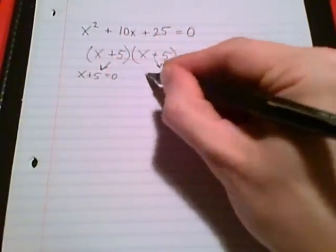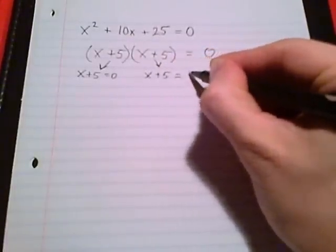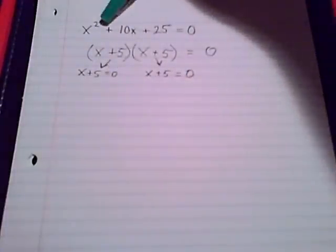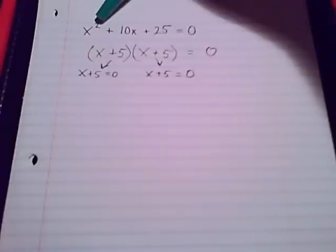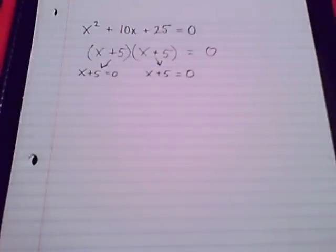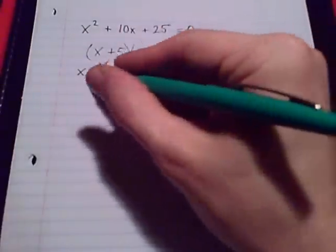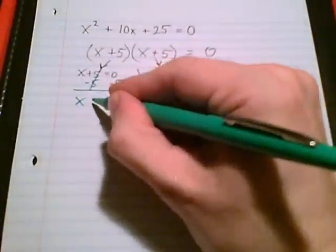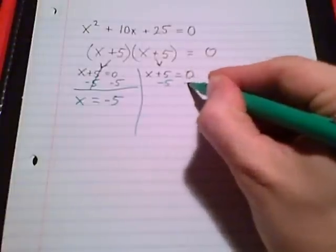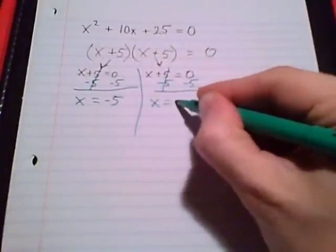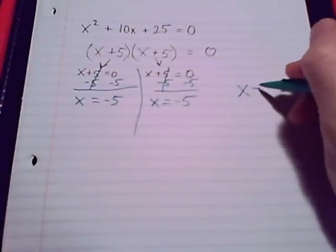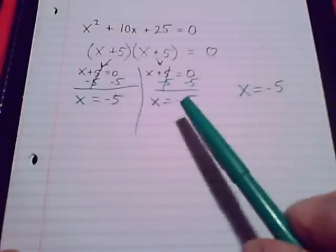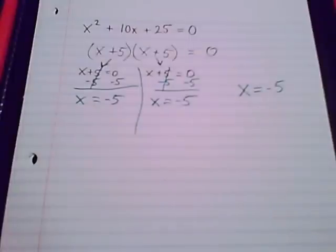We get x plus 5 equals 0 and an identical equation, another x plus 5 equals 0. It is a rule that the highest degree — here it's degree 2 — is the same number as how many solutions we get. We've seen two solutions all along. Solving each one, we get x equals negative 5 and another x equals negative 5.